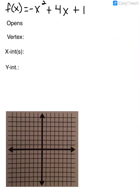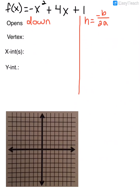Let's look at this example. First, we determine what direction it opens. Since I have a negative in front of my x squared, that means my a is negative, and that tells me that my parabola opens down. Now I want to find the vertex. My h is found by negative b divided by 2a. My b in this equation is 4, so I have negative 4 divided by 2 times a, which is negative 1. So that gives me negative 4 over negative 2, which is a positive 2 for the h-coordinate of my vertex.